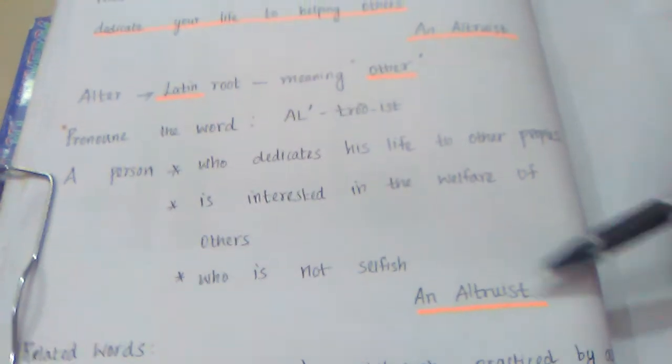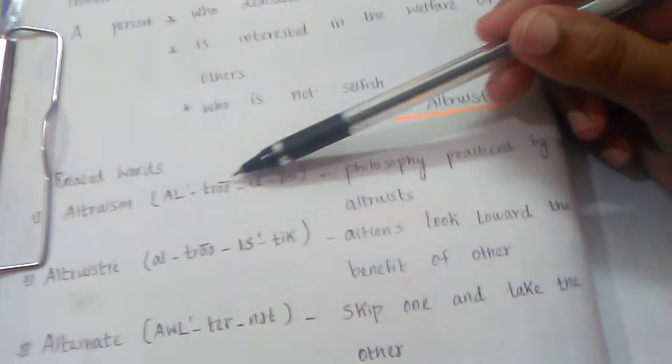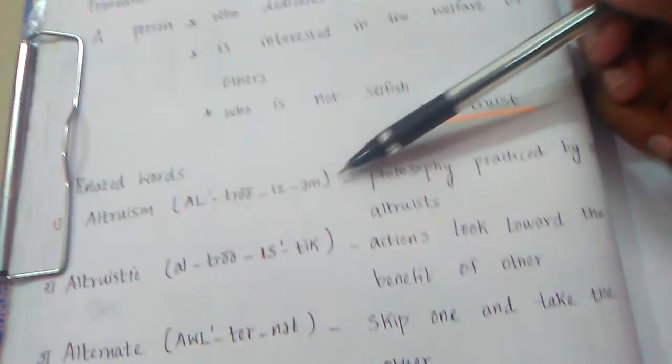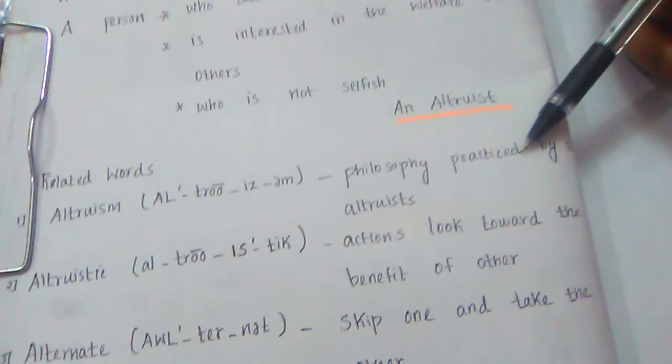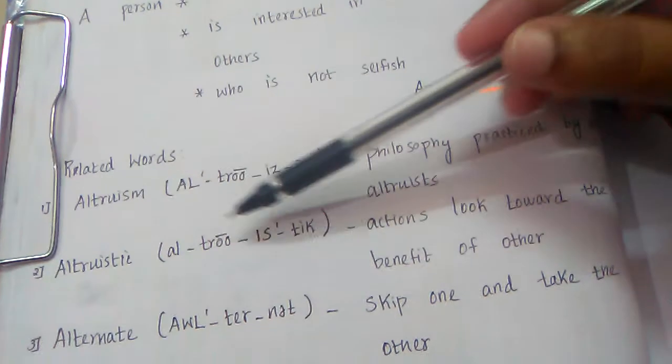Got it. So let us see the related words. The first word: altruism, A-L-T-R-U-I-S-M. Philosophy practiced by an altruist is called altruism. Altruistic, A-L-T-R-U-I-S-T-I-C. Actions that look towards the benefit of others are called altruistic.